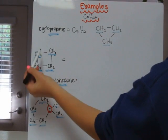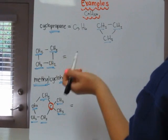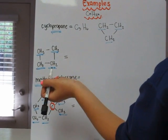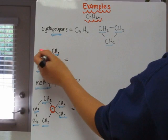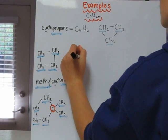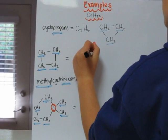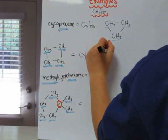So our next example, we have one, two, three, four carbons. So four would be bute, and we know it's cyclo because it's in the end-to-end chain. So it would be cyclobutane.